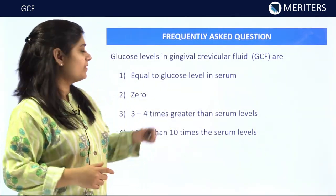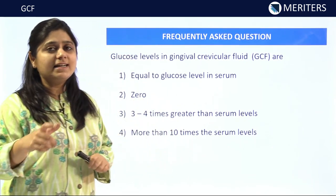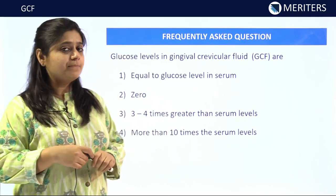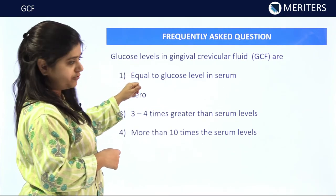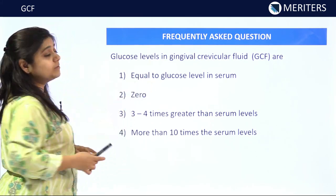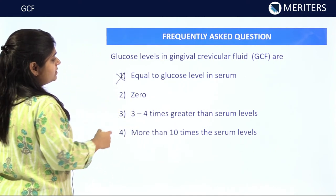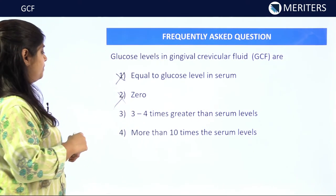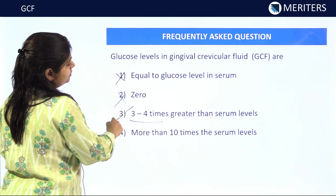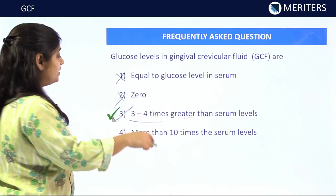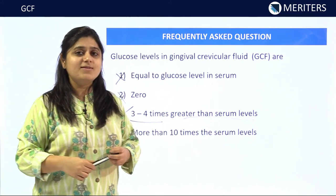The next question: glucose level in GCF. The options are: equal to glucose level in serum, zero in GCF, or three to four times greater than serum. The answer is option three — glucose levels in GCF are three to four times greater than that of the serum.